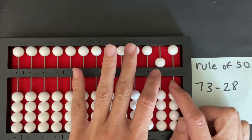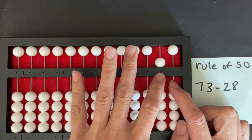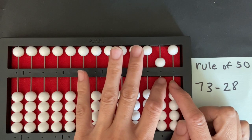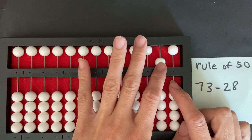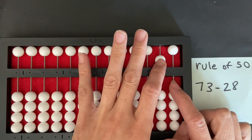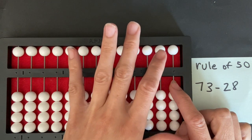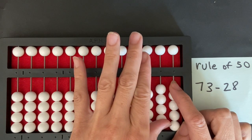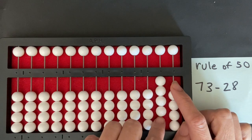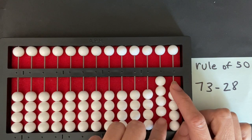So I have to come over to the tens rod. I don't have any ones beads in the tens rod, so I have to come up to the 5 bead and push it away. And as I do that, as I push away the 5 bead, I return the 4 ones beads on the ten rod.